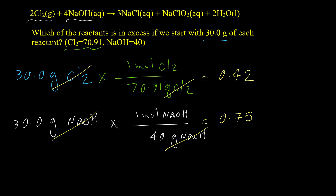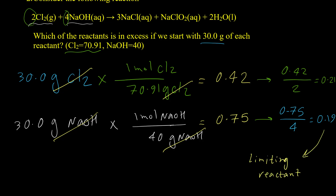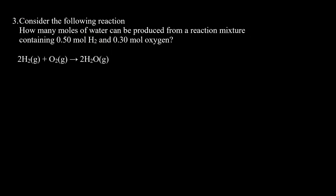The coefficient for Cl₂ is 2, so 0.42 divided by 2 gives 0.21 for Cl₂. The coefficient for sodium hydroxide is 4, so 0.75 divided by 4 gives 0.19 for NaOH. Since 0.19 is lower, sodium hydroxide is the limiting reactant and runs out first during the reaction. Therefore, chlorine is the excess reactant.